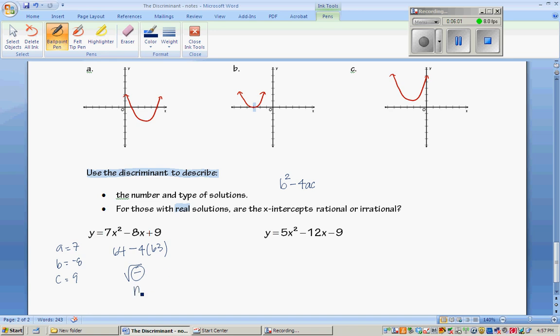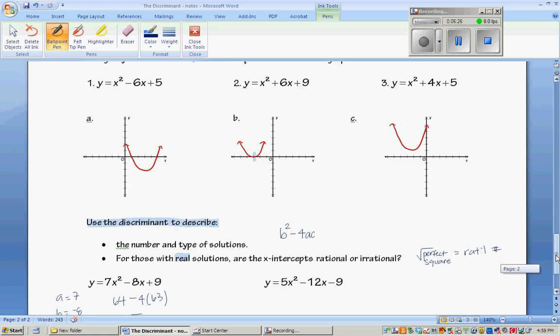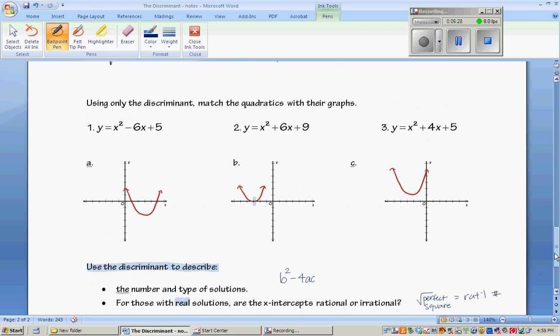So you try 5x squared minus 12x minus 9. And remember, if you get a square root that is a perfect square, then remember that equals a rational number. We'll check back with you for these answers on Monday. Good luck this weekend.